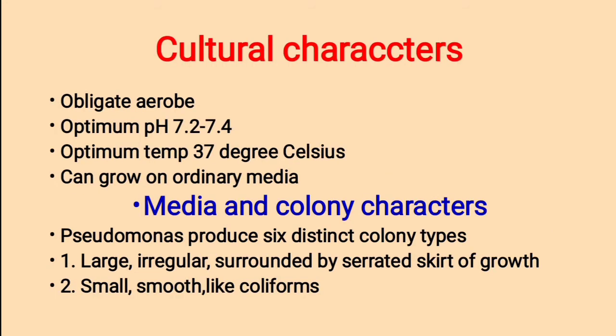Cultural characters. They are obligate aerobes. The optimum pH is about 7.2–7.4 and optimum temperature is about 37 degrees Celsius. They can grow on ordinary media like nutrient agar, blood agar, etc.